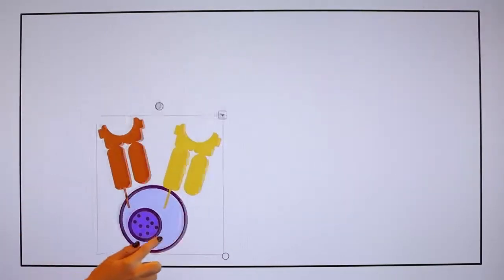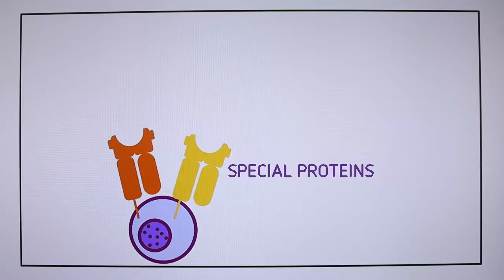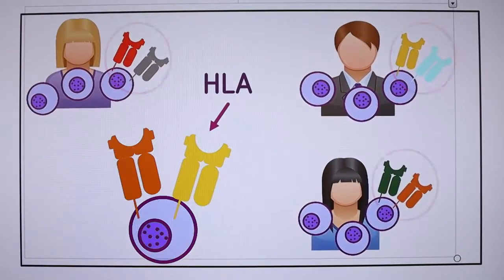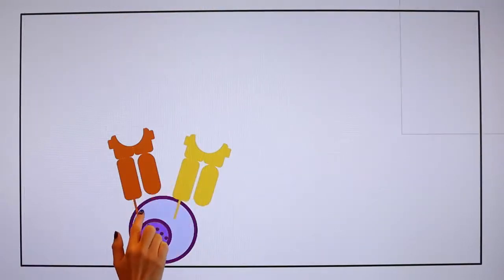Your cells have special proteins on the surface that help defend against foreign cells. These special proteins are called HLA. Everybody has them, but there are thousands of different colors.